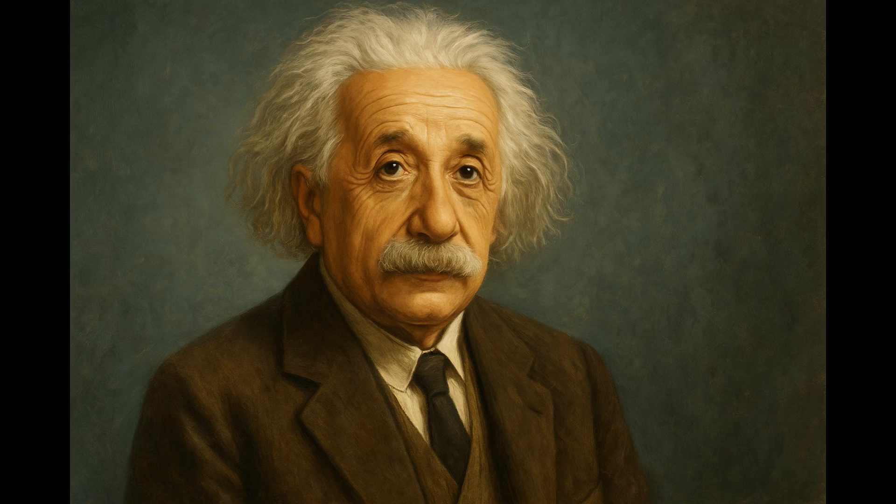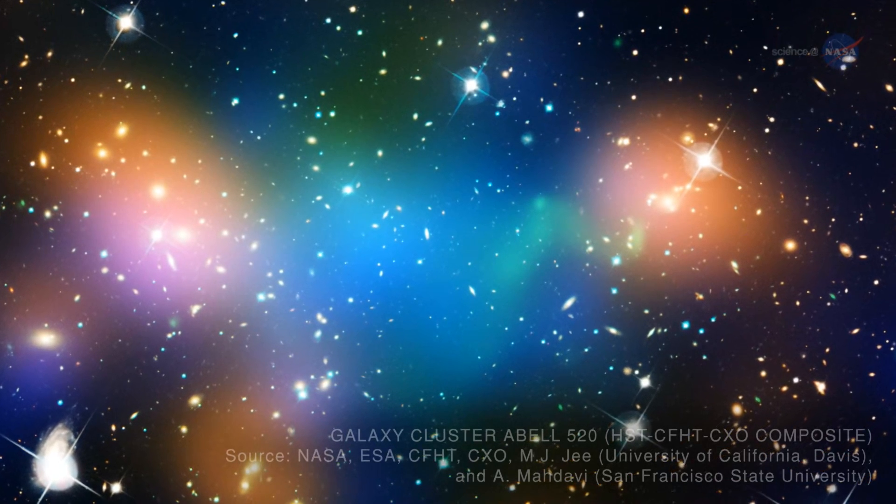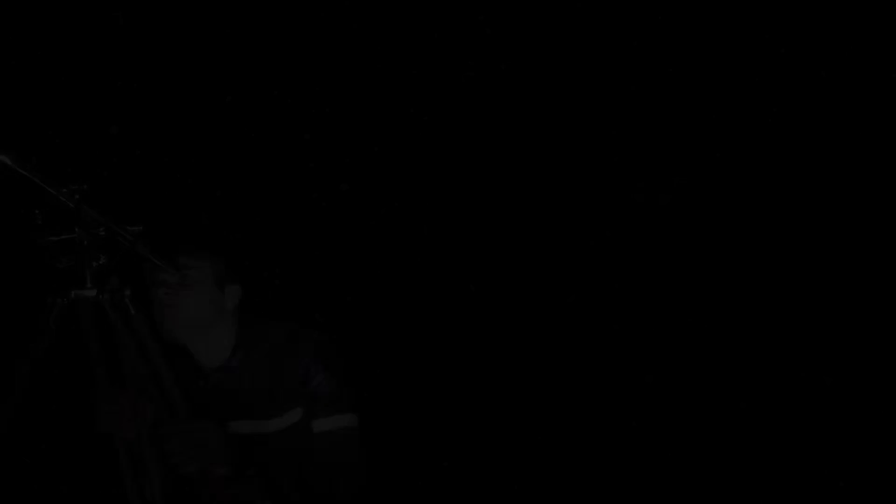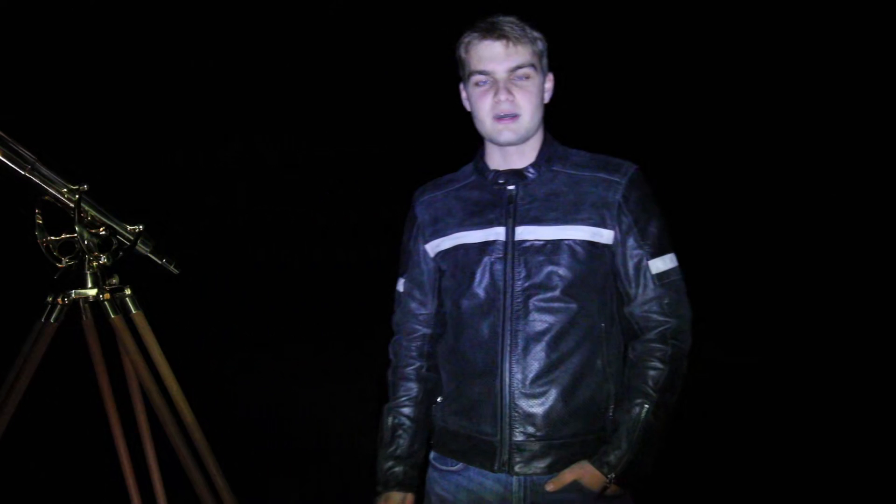Even Einstein's general theory of relativity, which describes gravity as the curvature of space and time caused by mass, requires this missing mass for the universe to behave as we observe. But what if gravity were something entirely different from what we've always believed?